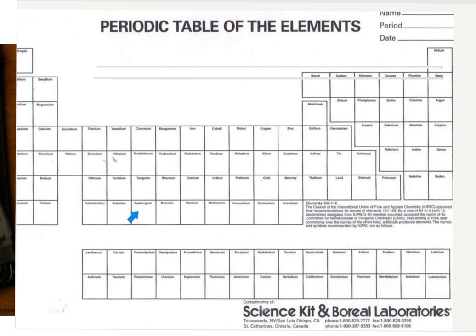At various times, the elements have been renamed. When first discovered, names are based on their chemical structure. But as the chemical society gets together and recognizes the contributions of scientists, elements will be renamed for that reason. For example, rutherfordium and seaborgium are named after various scientists. You can go in and fix your table accordingly, or you can leave your table as is — that will not affect our future assignments.